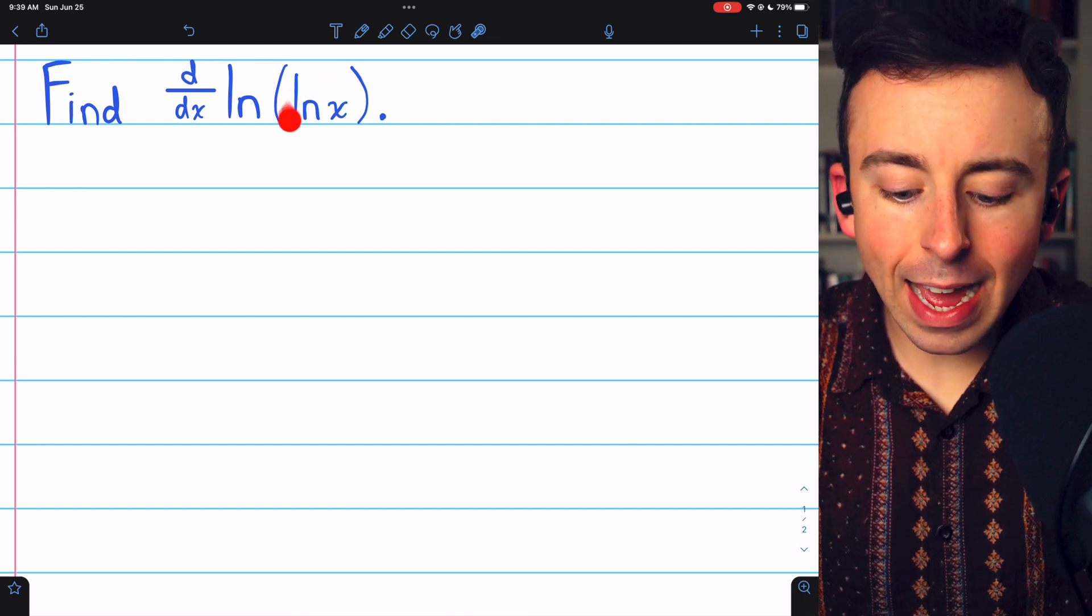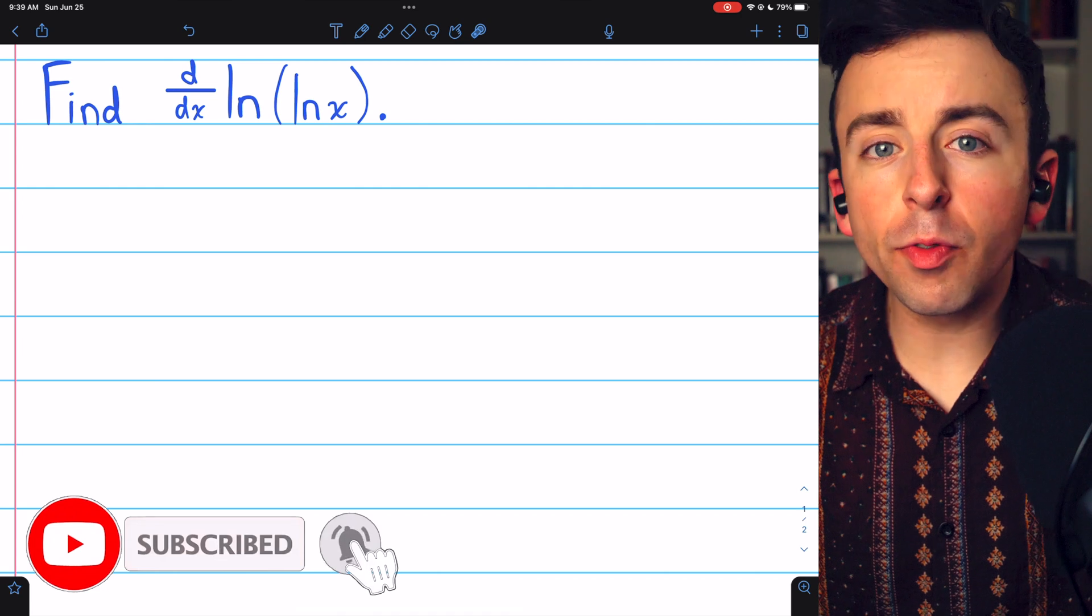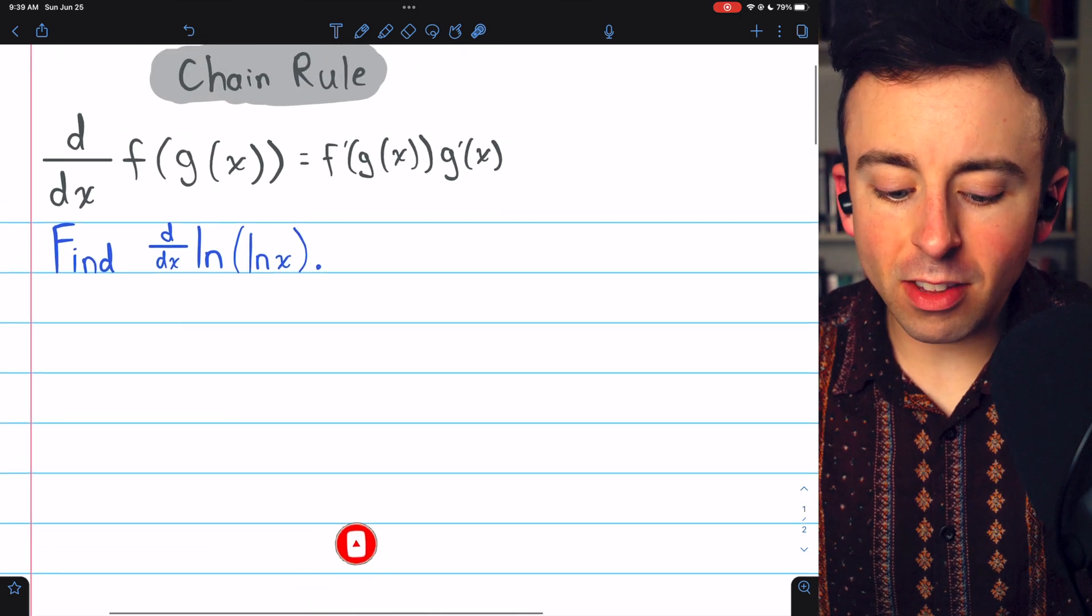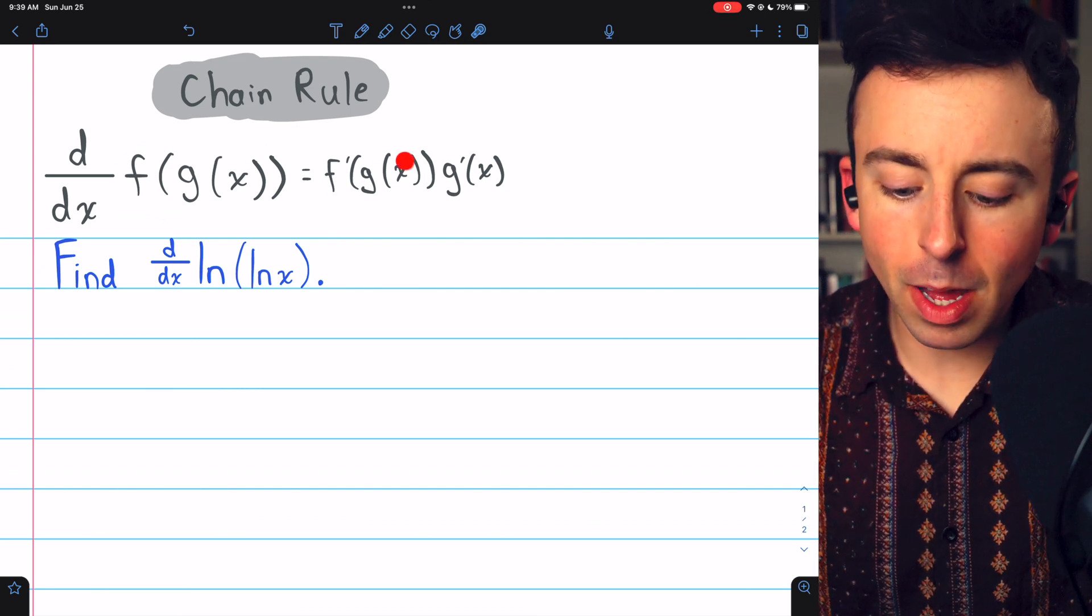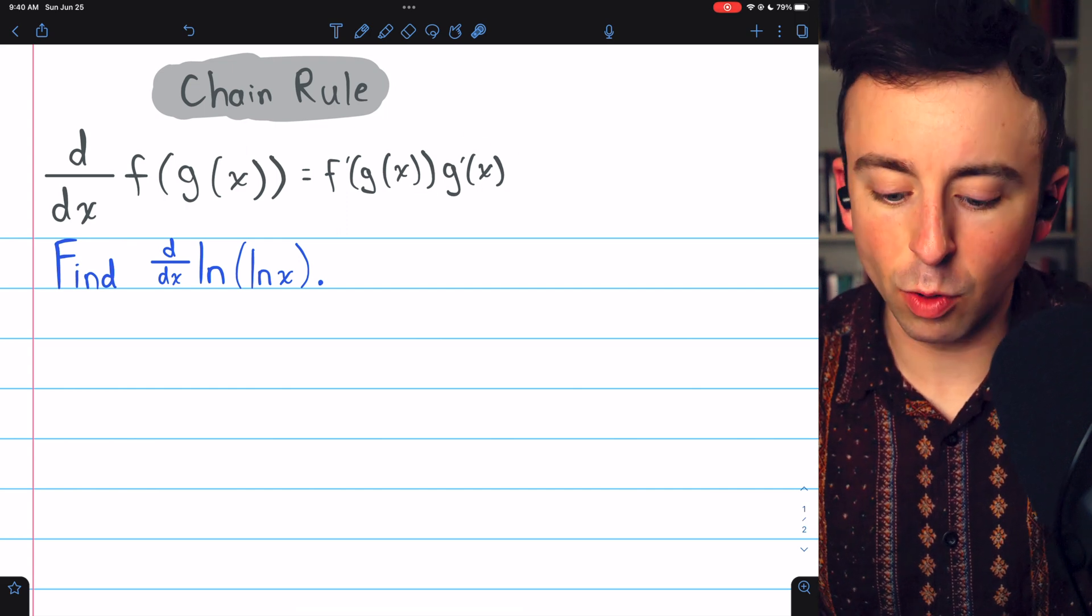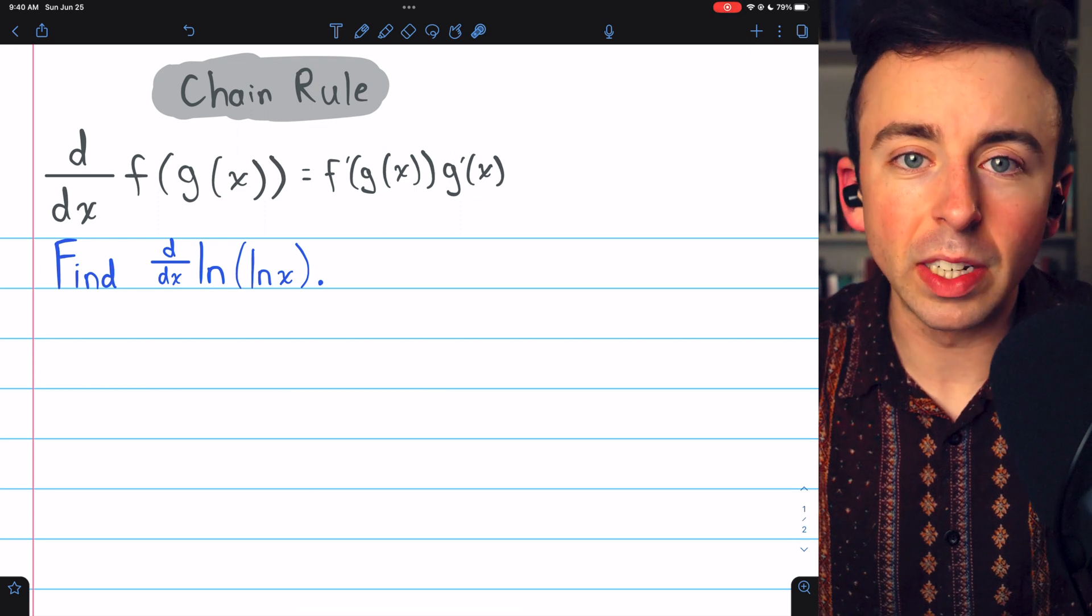The natural log of the natural log of x is a composite function. So to find its derivative, we'll need to use the chain rule, which tells us the derivative of a composite function f of g of x is f prime of g of x multiplied by g prime of x, the derivative of the outside evaluated at the inside multiplied by the derivative of the inside.